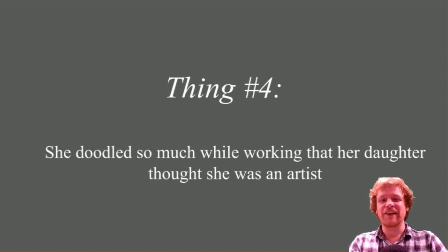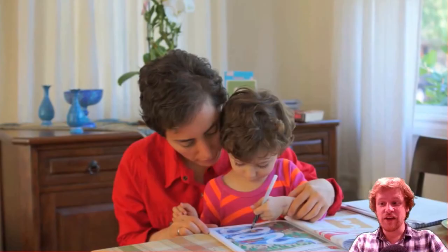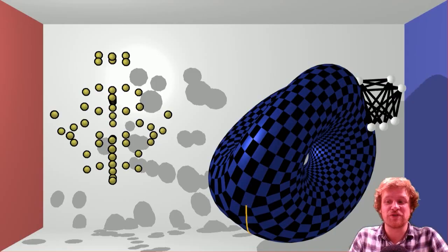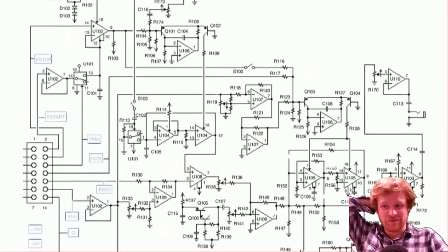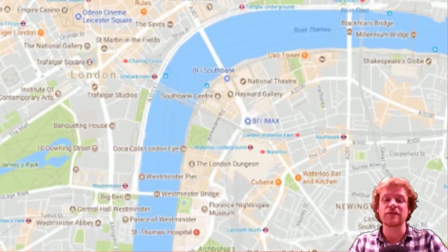So, Maryam Mirzakhani doodled so much while working that her daughter thought she was an artist. I find this story tremendously sweet, and it's very interesting. So, her work is extremely visual, all of this stuff, right? And so she used to write equations, but her preferred method of working, she'd have these huge pieces of paper, and she'd just make it so that she could doodle, doodle, doodle. You know, doodle whatever she needed to doodle in order to think about these problems that she was facing. And it's such a pity that when the media covered her reception, her achievement in winning the award, and her death, you really didn't see many visualizations like that, which I think is such a shame. But there you go. Thank you.